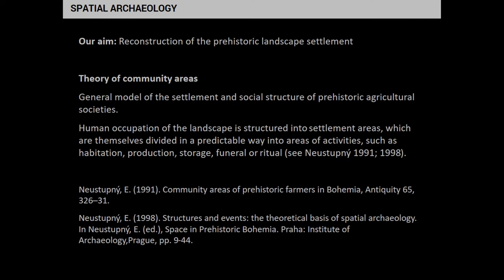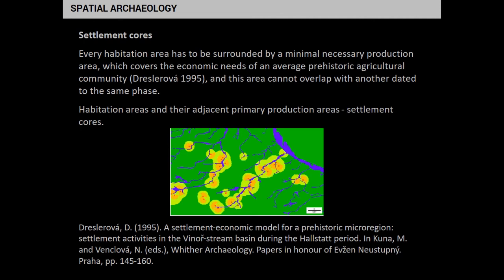The theory of community areas, formulated by F.G. Neustupný, says that human occupation of the landscape is structured into settlement areas which are to a degree predictable. We have a habitation area where the houses are, surrounded by areas of different activities — for us, mostly agricultural activities. Dagmar Dresslerová further elaborated on this based on archaeological and ethnographical evidence, and specified limits for the agricultural production area around the settlement — how large it should be. That is our starting point.